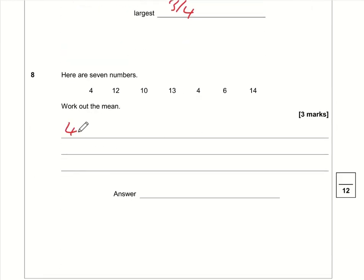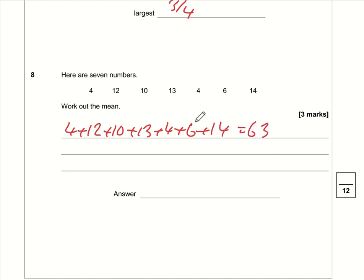Question eight: work out the mean. Add all the values: 4 + 12 + 10 + 13 + 4 + 6 + 14 = 63. Divide by the number of values, which is seven. 63 divided by 7 is 9, so the mean is 9.